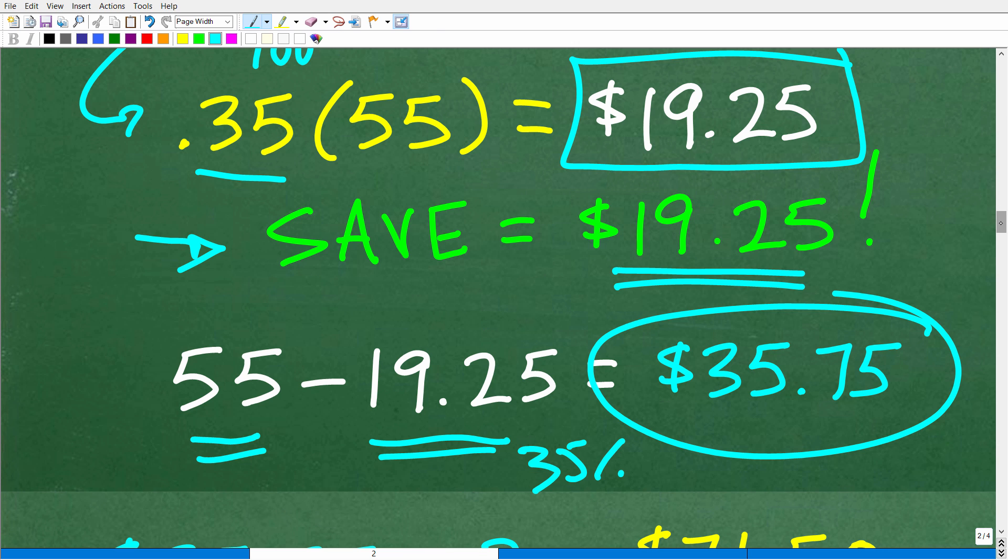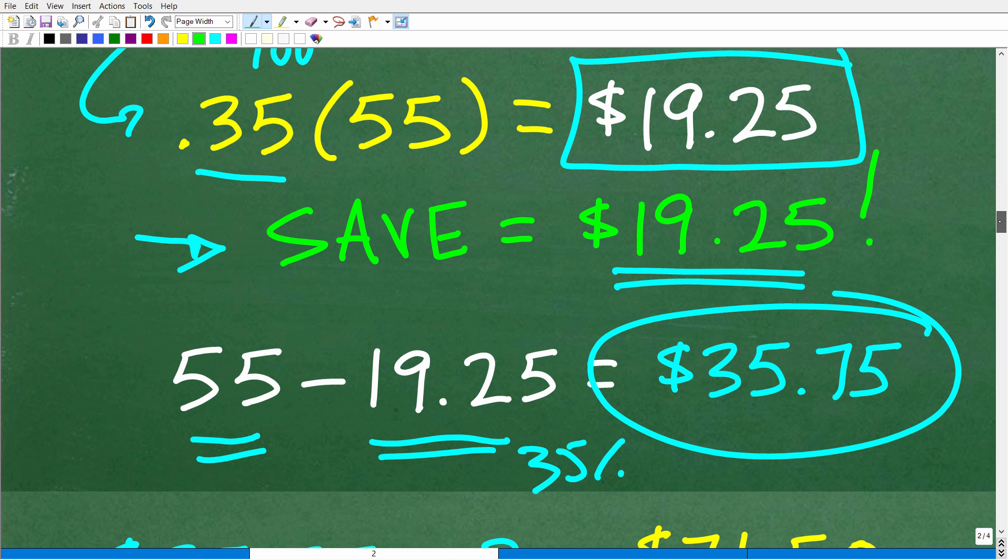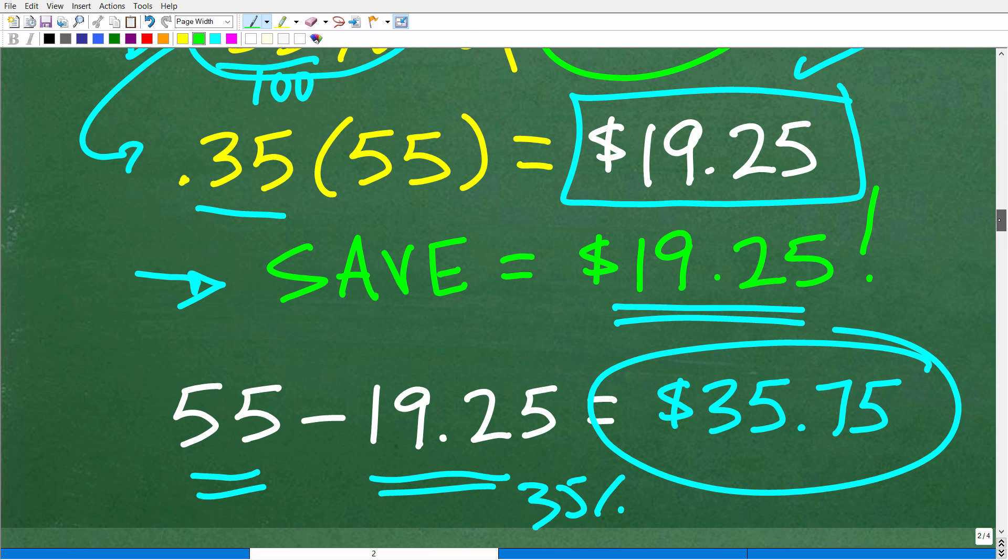Which of course is $19.25. So we get to pay $35.75. Now, some of you might have recognized, well, instead of doing it this way, if it's 35% off, what we're really doing is just paying 65% of the price. So 100% minus 35 is 65%. So you could more directly figure out the actual cost by taking 0.65 times 55, but it still gets you to the same place, which is 35.75.